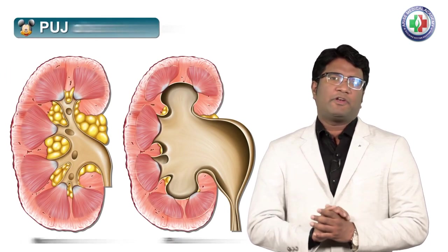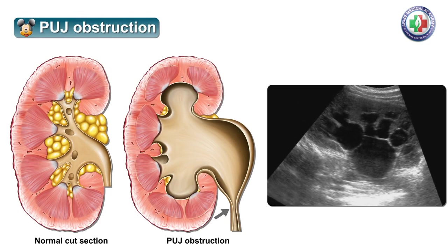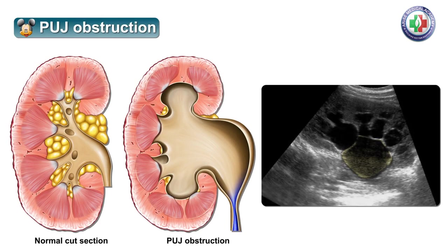There are other sites also where you see this Mickey Mouse appearance. In pelviureteric junction obstruction on ultrasound, the dilated pelvis and calyceal system take the shape of a Mickey Mouse. In pelviureteric junction obstruction, you will not see the ureter, but the dilated pelvis and dilated calyces give the appearance of a Mickey Mouse.